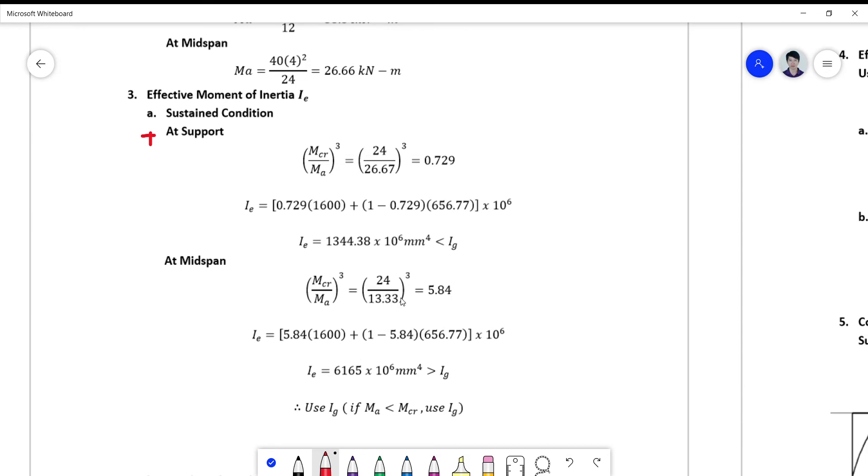And we notice that since your cracking moment is greater than the moment applied here, there will be a big value for your ratio such that your effective moment of inertia will be greater than IG. And in this case, we cannot exceed IG, so we use IG in terms of your I effective here. So if I effective is greater than IG, IG is only 1600 times 10 to the 6, therefore we use IG as your effective moment of inertia.